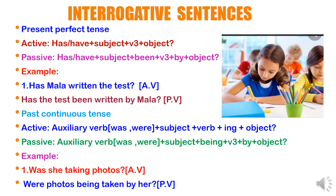Past continuous tense in interrogative sentence. In active voice: auxiliary verb (was/were) plus subject plus verb+ing plus object. In passive voice: auxiliary verb (was/were) plus subject plus 'being' plus V3 plus 'by' plus object. Example: 'Was she taking photos?' becomes 'Were photos being taken by her?' — 'were' because 'photos' is plural. 'Taking' changes to 'taken' (V3), and 'she' changes to 'her'.